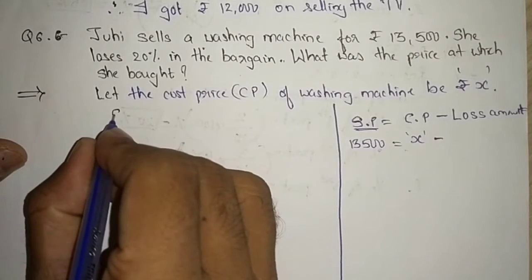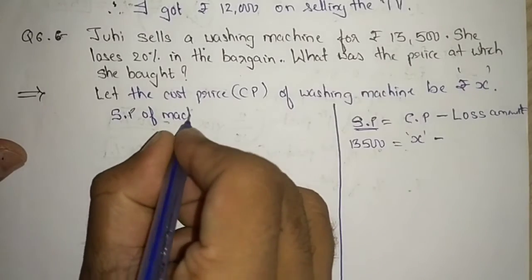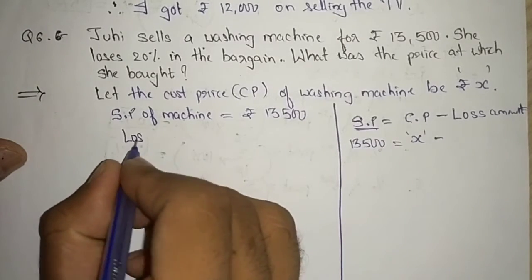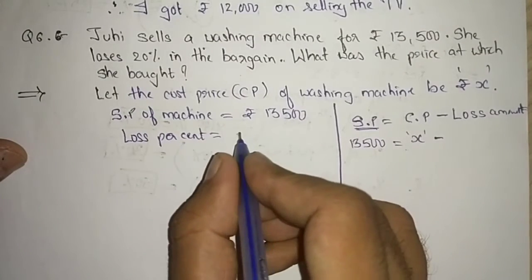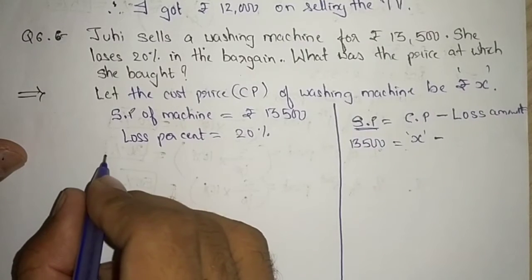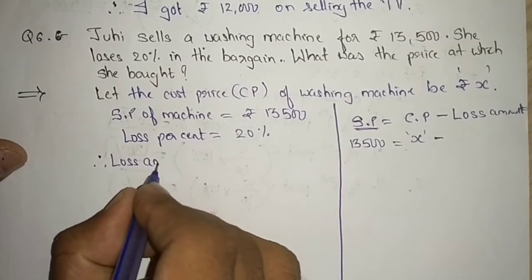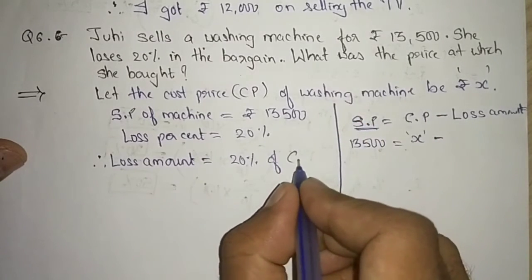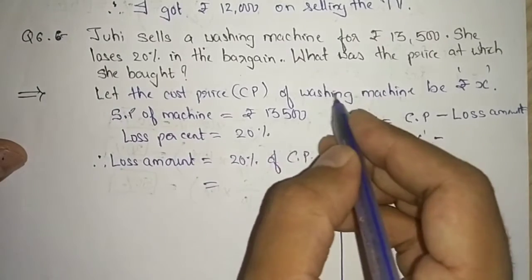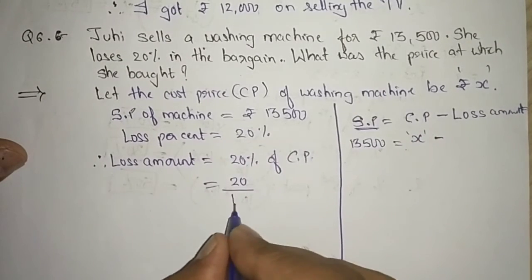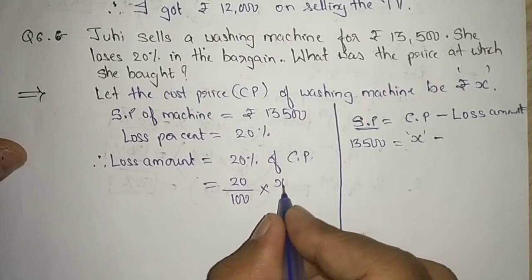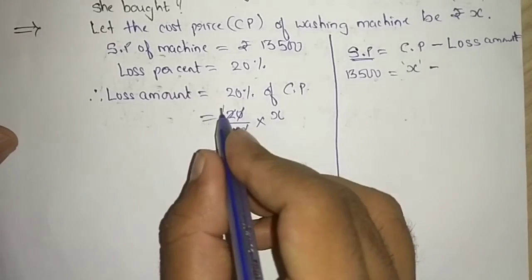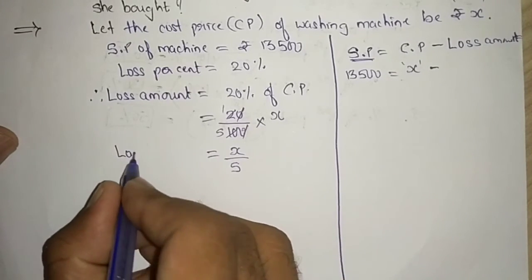Selling price of washing machine equals rupees 13,500. Loss percent equals 20 percent. Now to find the loss amount: loss amount equals 20 percent of cost price. Since cost price is x, loss amount equals 20 divided by 100 multiplied by x. Cancelling zeros, loss amount equals x divided by 5.